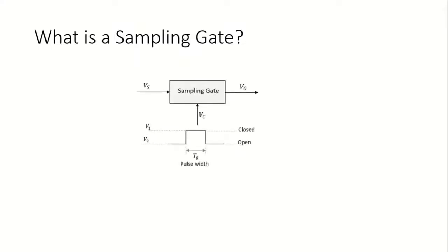A sampling gate is simply a circuit which transmits an exact replica of the input over a given period of time tg, otherwise it transmits zero. Depending on the control signal or gating signal supplied to the gate externally, it transmits the input to the output as it is.